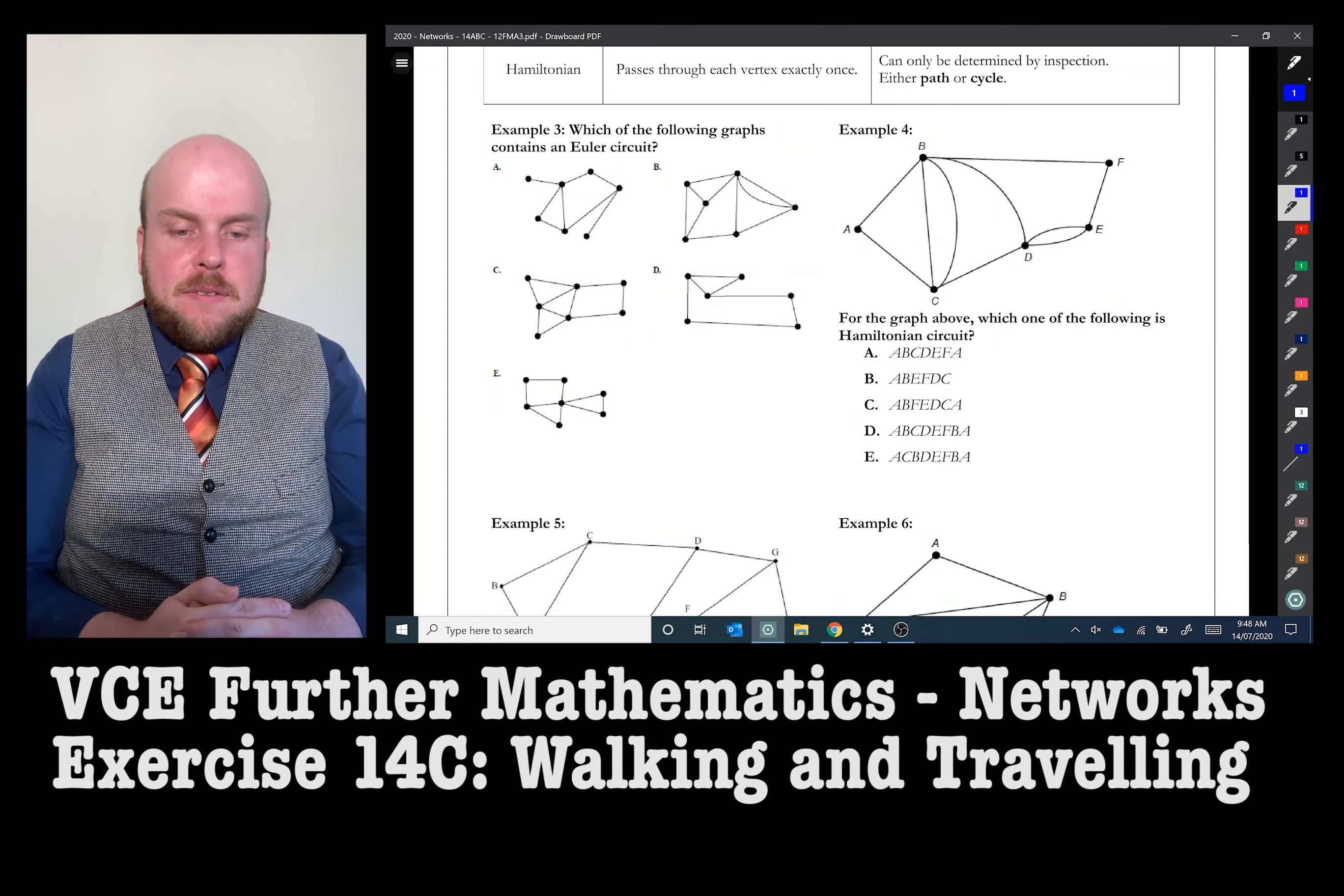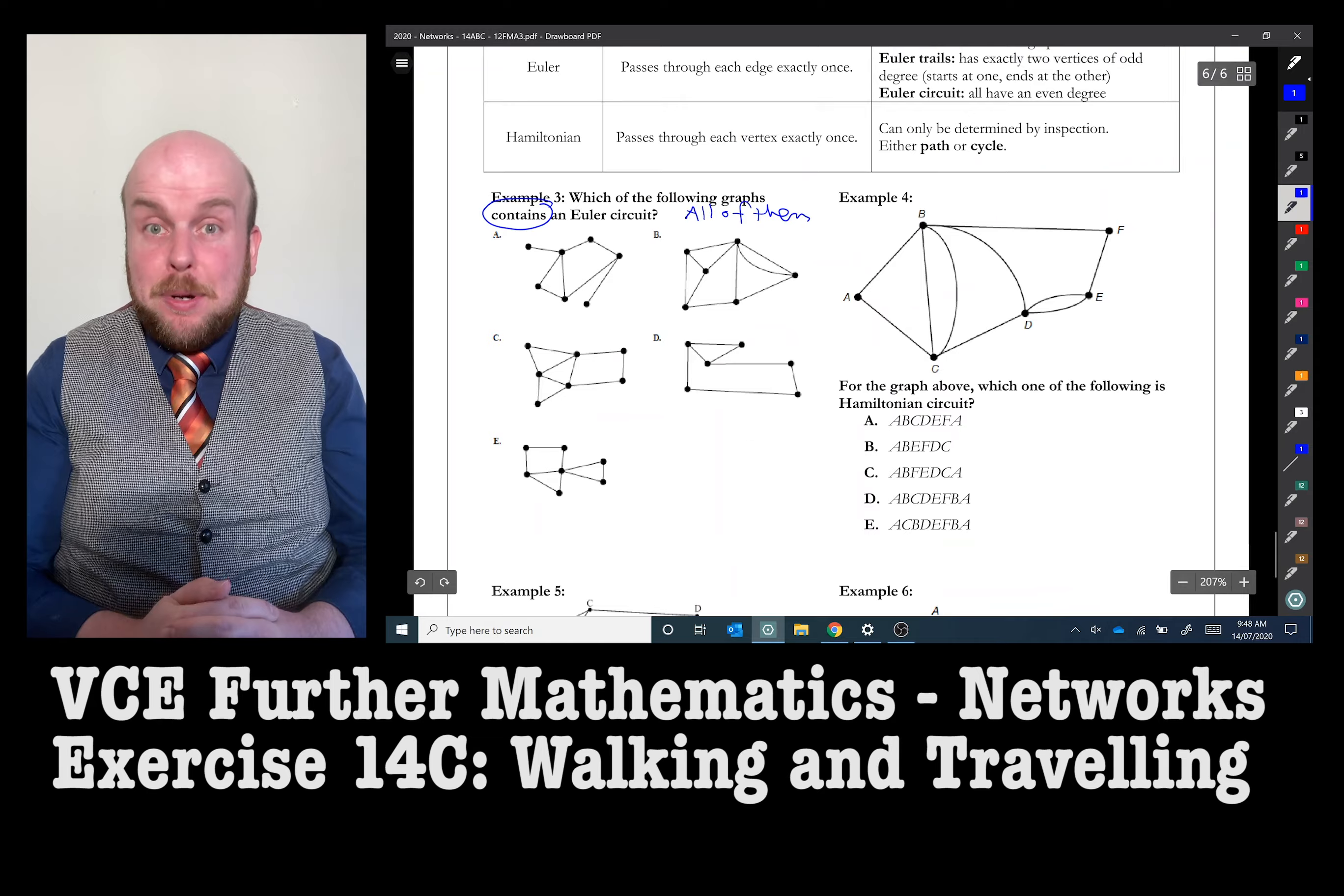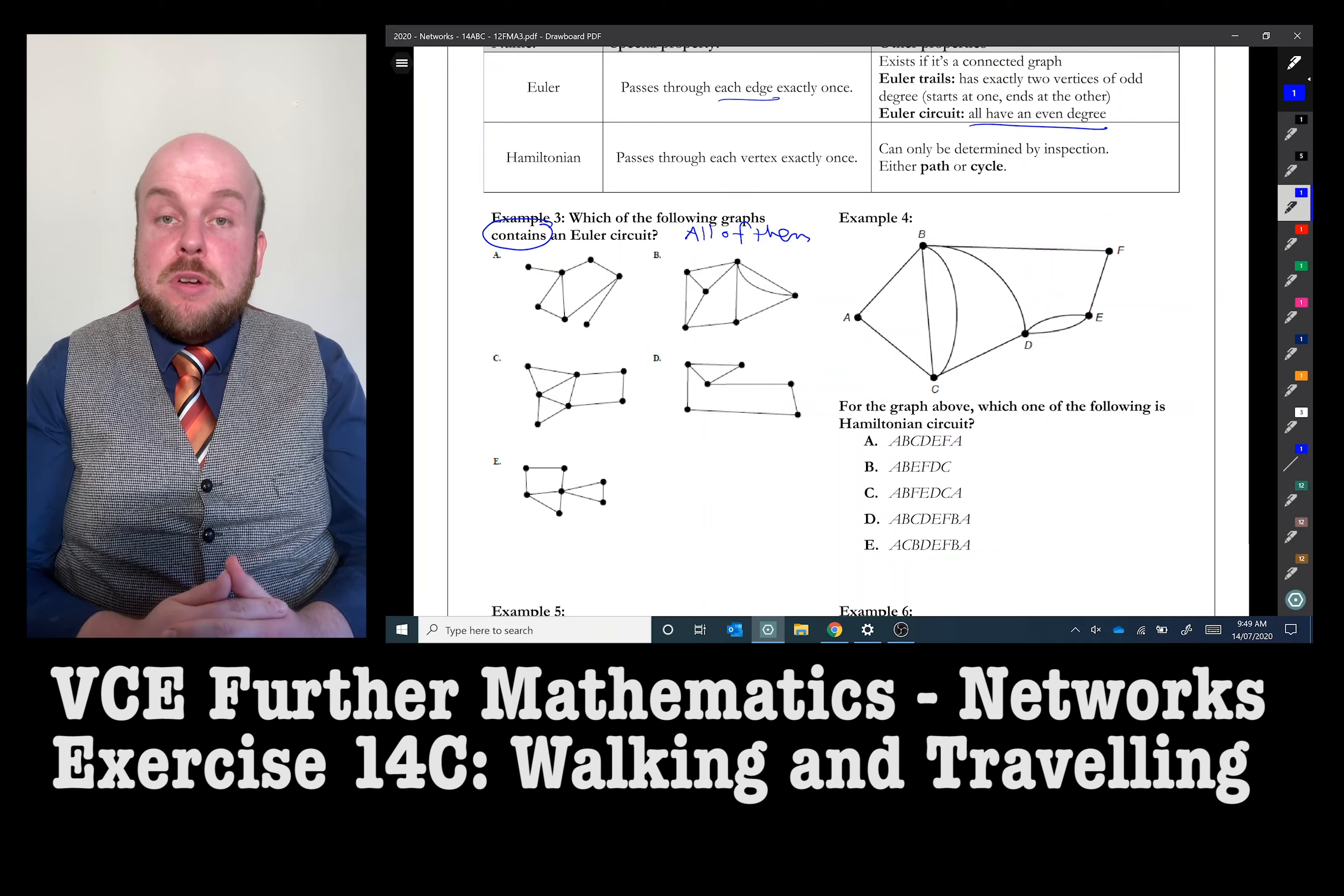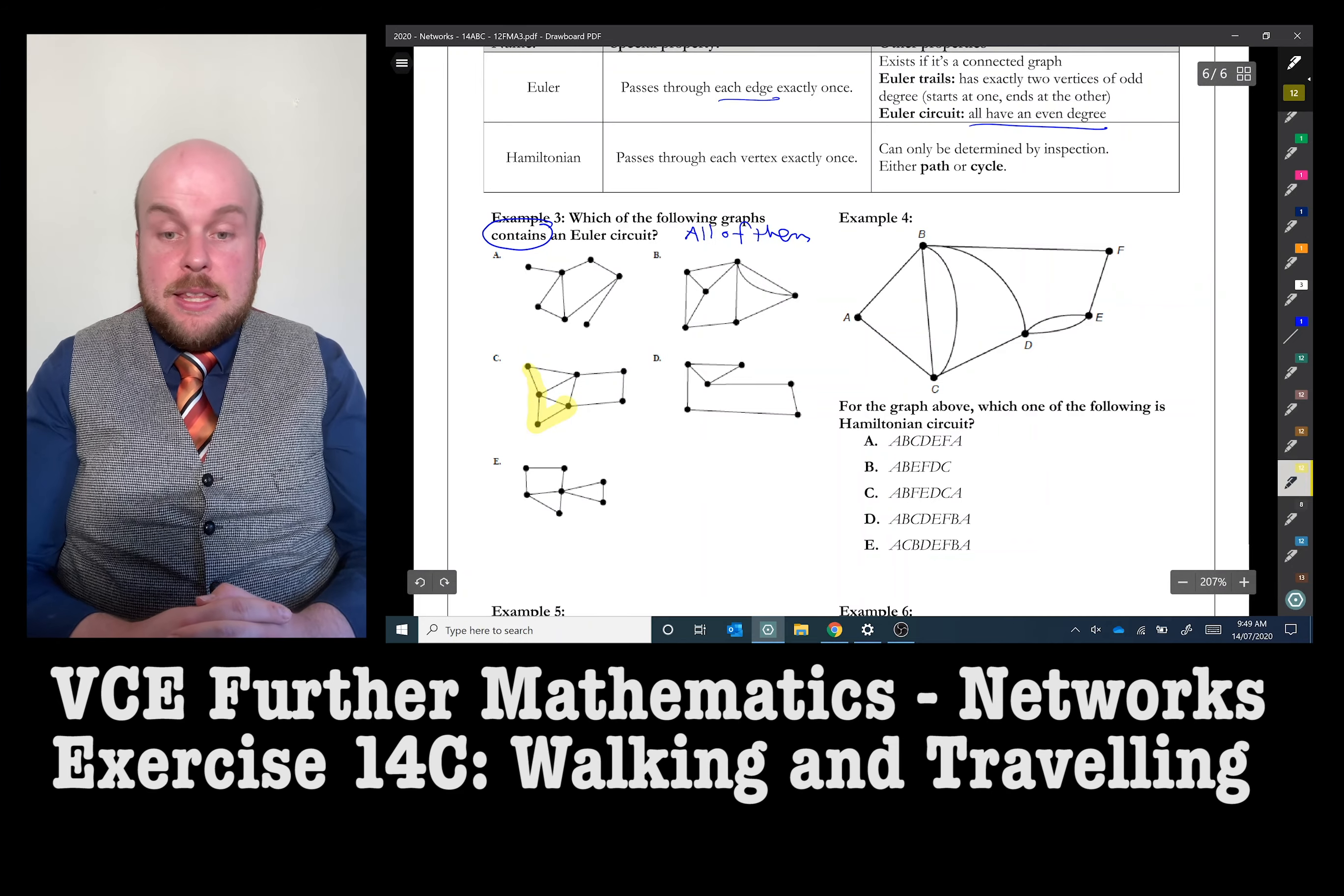In example three, I've written here which of the following graphs contains an Euler circuit. I'm actually going to suggest to rephrase this question because, spoiler alert, they all contain an Euler circuit in some way or other. However, we want to know which one is an Euler circuit. So let's rephrase it. Which one is an Euler circuit?